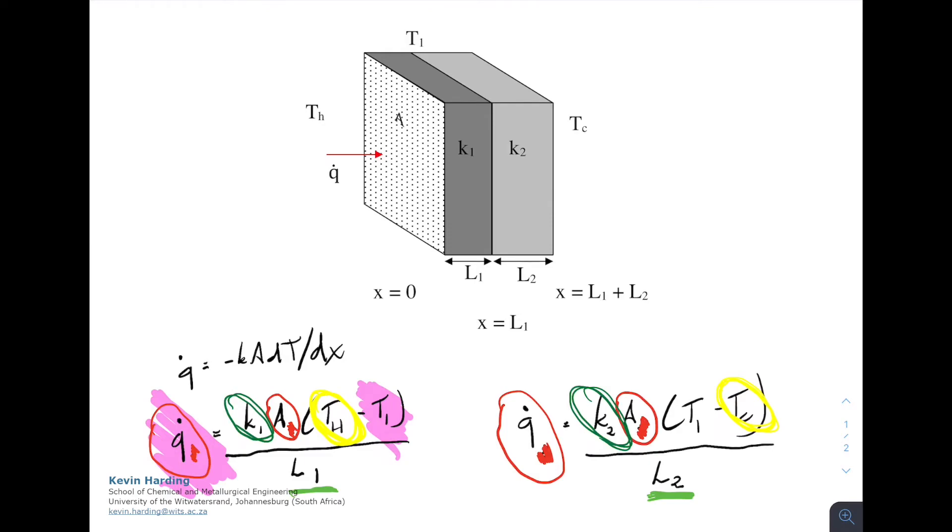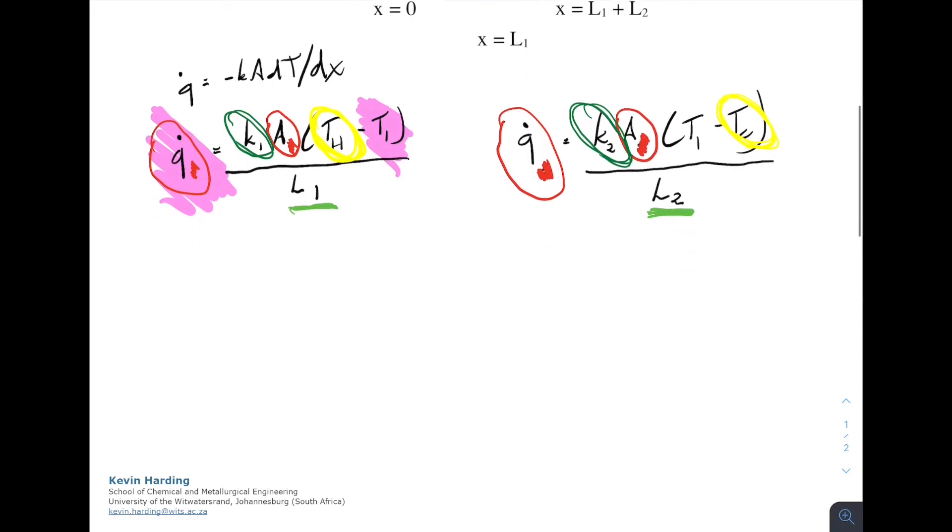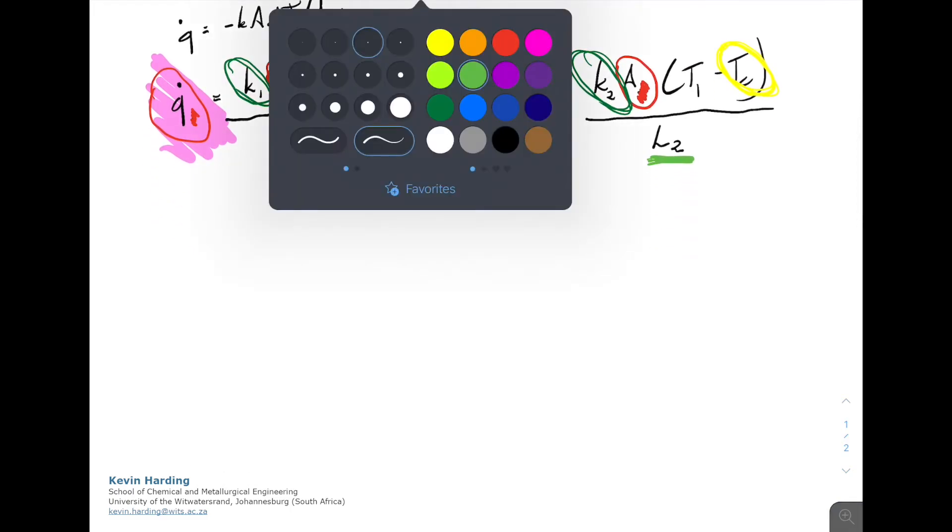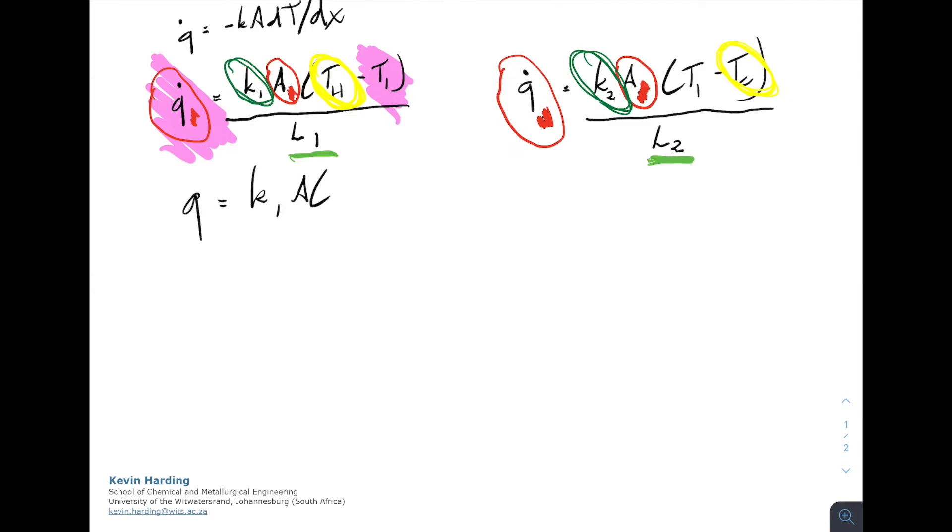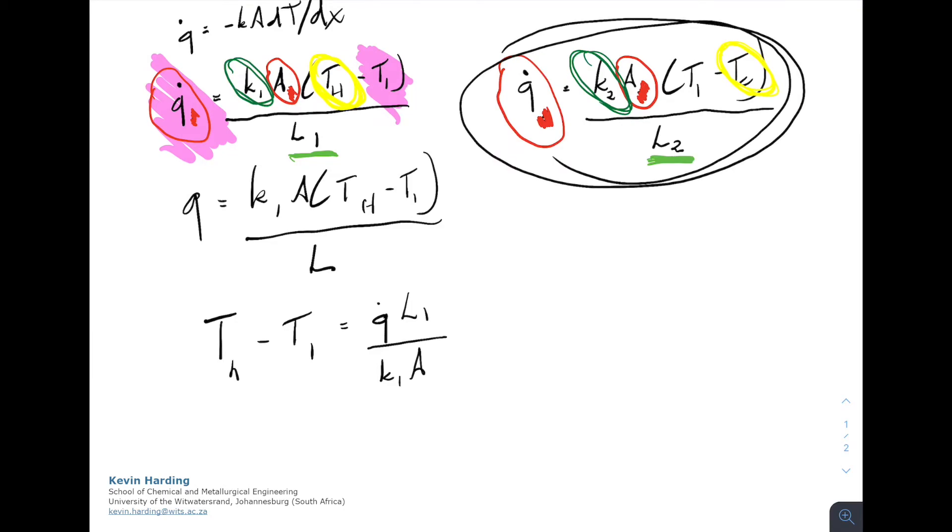What's the quick and easy way? I suggest rewriting T hot minus T1 equals Q L1 divided by K1 A. The same for the second slab: T1 minus T cold equals Q L2 divided by K2 A. With two equations and two unknowns, we should be able to solve.